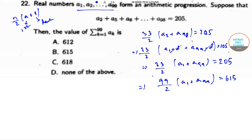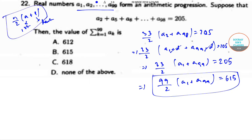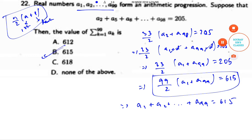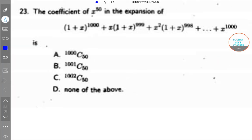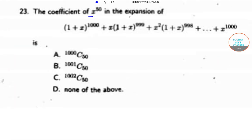This is identical to the AP sum formula with 99 terms where a₁ and a₉₉ are the first and last terms respectively. So we can write a₁ plus a₂ up to a₉₉ equals 615. The required answer is 615, so the answer is option B.